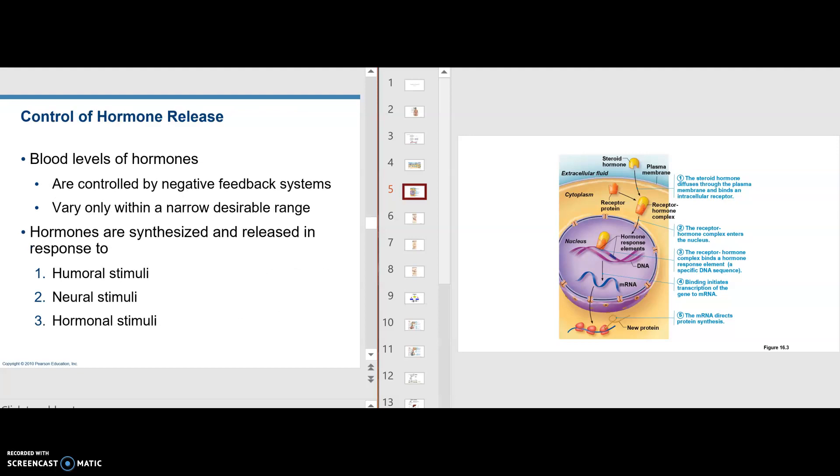Control of hormone release. Blood levels of hormones are controlled by negative feedback systems, and we talked about negative feedback in ANP1. They vary only within a narrow range. Hormones are synthesized and released in response to humoral stimuli, neural stimuli, and hormonal stimuli. So let's look at that.